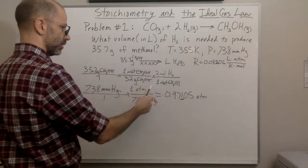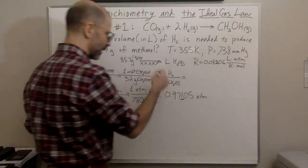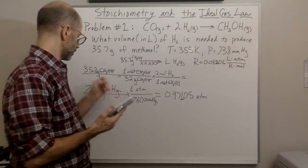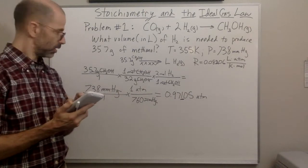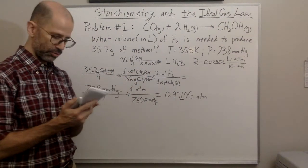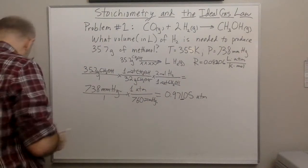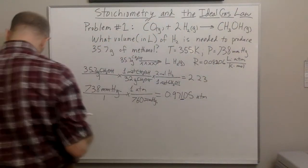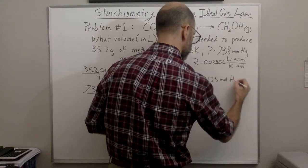Now I have my atmospheres, my temperature, and I need to calculate the number of moles. I take 35.7 multiplied by 2 and divide by 32, which gives me 2.2325 moles of H2. I'm going to pay attention to significant figures here.